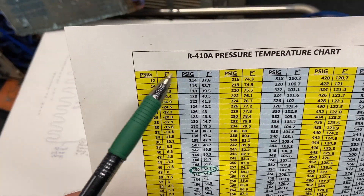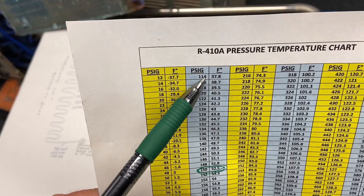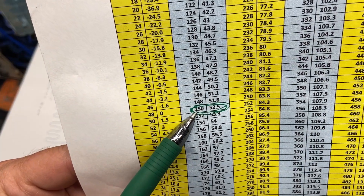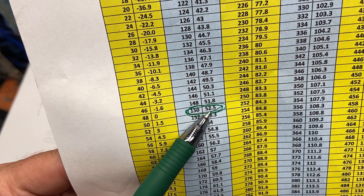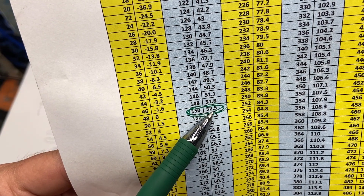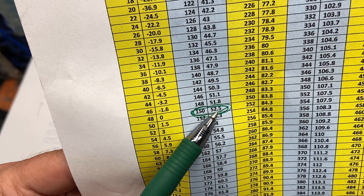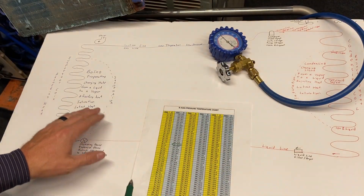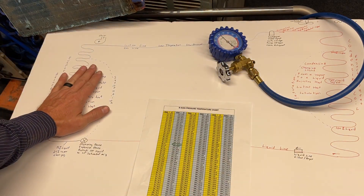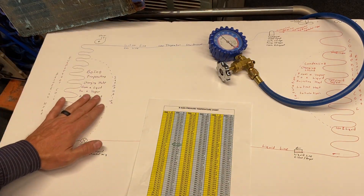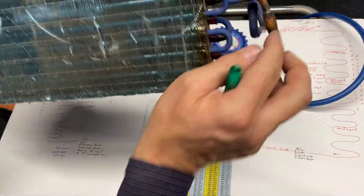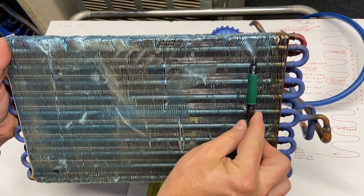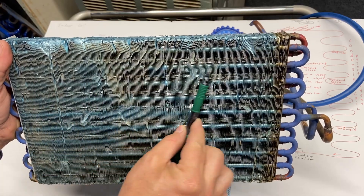Here's our temperature-pressure chart — pressure and temperature. If I scroll down and find 150 PSIG, that converts to a saturated temperature of 52.5°F, also called a boiling temperature of 52.5 or an evaporator temperature of 52.5. The pressure is the same throughout the whole low side, but that 52.5°F is taking place right through the majority of the evaporator coil.